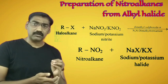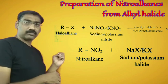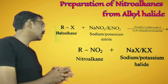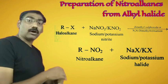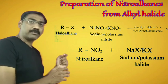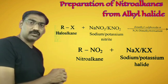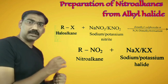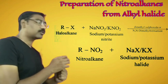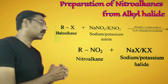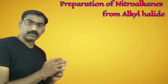The general equation: an alkyl halide — especially alkyl bromide or iodide — reacts with NaNO2 or KNO2 in the presence of dimethyl sulfoxide to give R-NO2, that is nitro alkane, along with NaX or KX (sodium halide or potassium halide), depending on which nitrite was used.